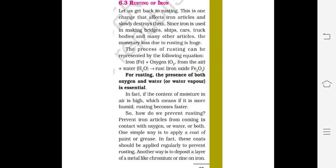Next is rusting of iron. Rusting is one change that affects iron articles and slowly destroys them. Since iron is used in making bridges, ships, cars, trucks, and many other articles, the monetary loss due to rusting is huge. The process of rusting can be represented by the following equation: iron (Fe) plus oxygen plus water (H₂O) gives rust, i.e., iron oxide (Fe₂O₃).